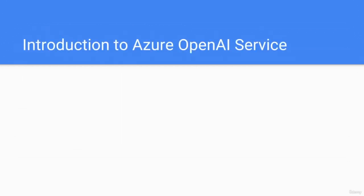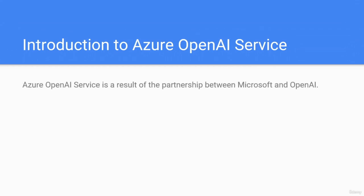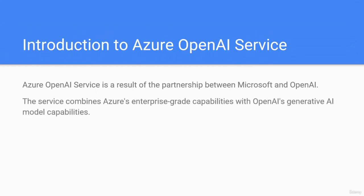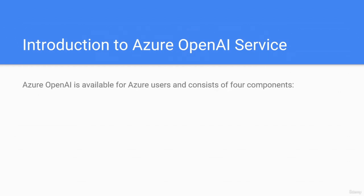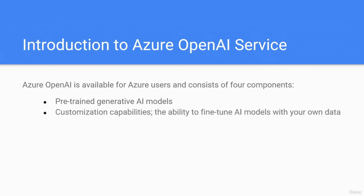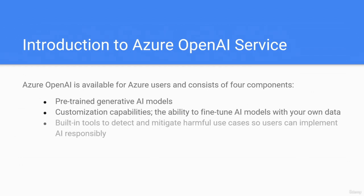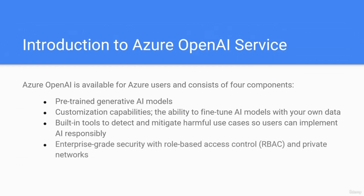Azure OpenAI Service is the result of the partnership between Microsoft and OpenAI. The service combines Azure's enterprise-grade capabilities with OpenAI's generative AI model capabilities. Azure OpenAI is available for Azure users and consists of four components: pre-trained generative AI models, customization capabilities, the ability to fine-tune AI models with your own data, and built-in tools to detect and mitigate harmful use cases so users can implement AI responsibly, plus enterprise-grade security with role-based access control (RBAC) and private networks.